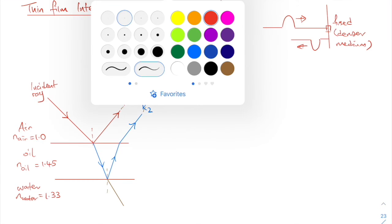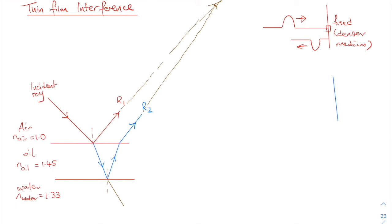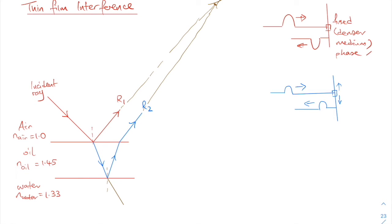On the same note, consider a pulse where the end is free to move up and down — not fixed. It will not restrict the up-down movement, so the pulse that returns is the same, with no flip. The red pulse with the fixed end experiences a phase change of π radian, while the blue pulse, where the denser medium meets an optically less dense medium, experiences no phase change.